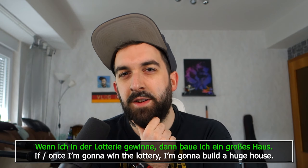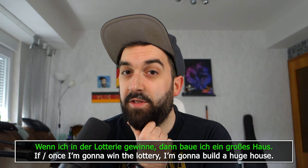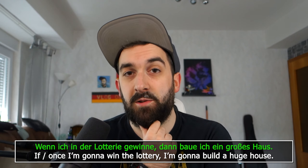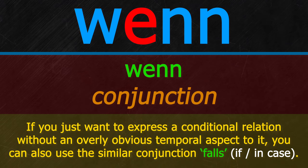"Wenn ich in der Lotterie gewinne, dann baue ich ein großes Haus." — "When or if I'm gonna win the lottery, I'm gonna build a big house." To make this a bit less ambiguous, Germans might also substitute WENN with the equally frequent conjunction FALLS, which limits the semantic side to the conditional aspect and pretty much erases the temporal one.